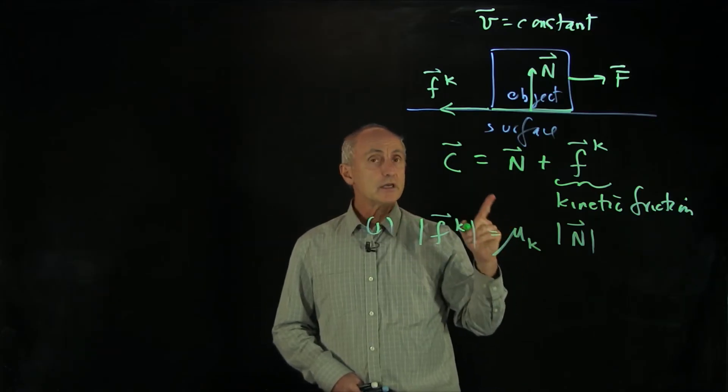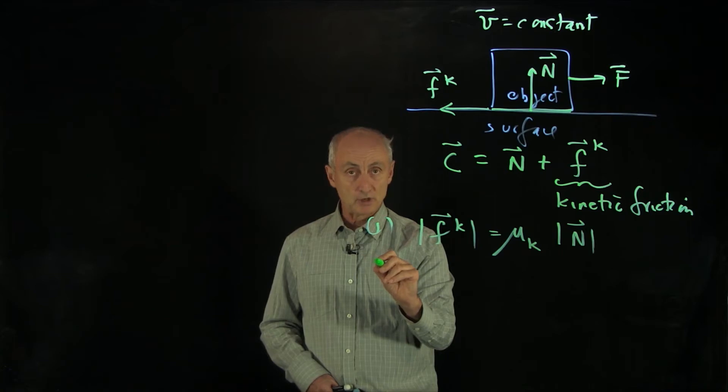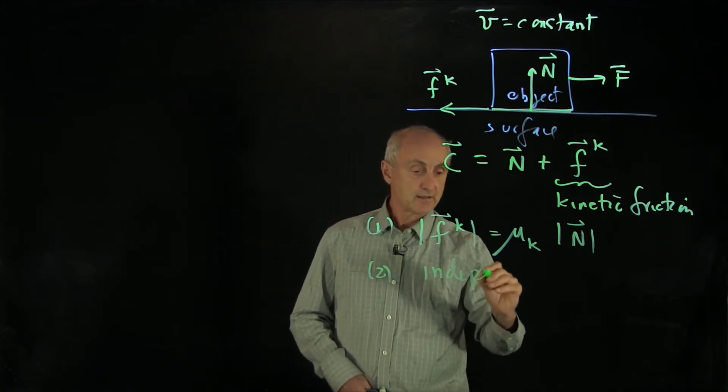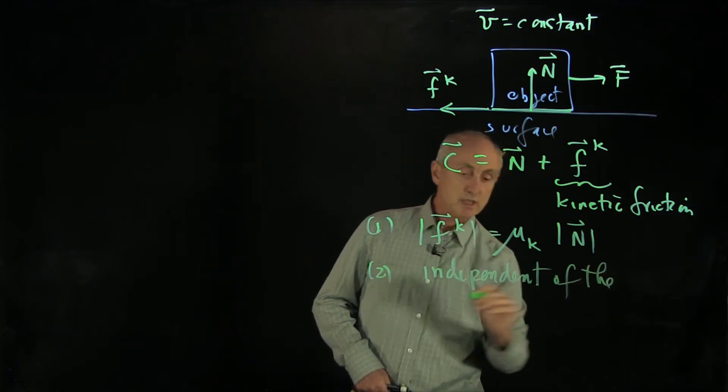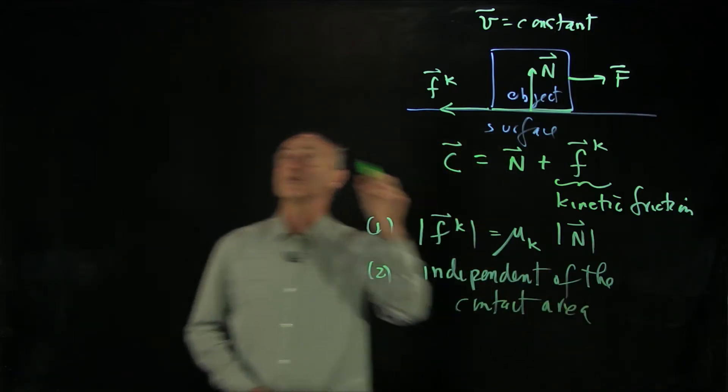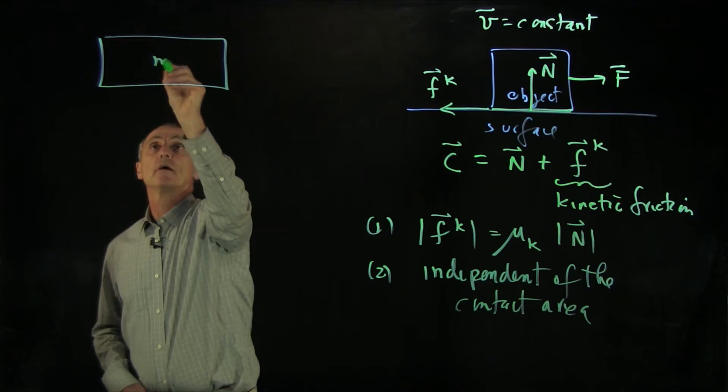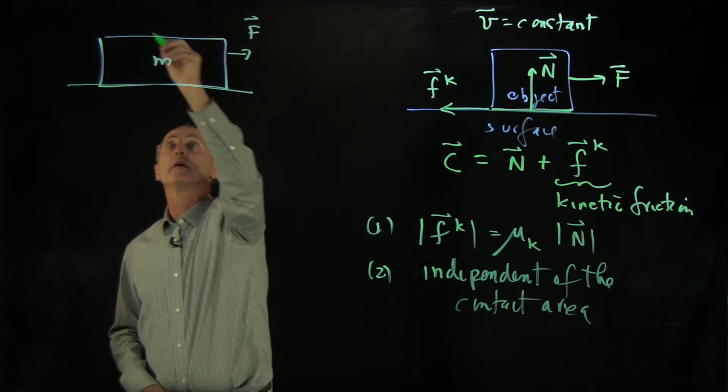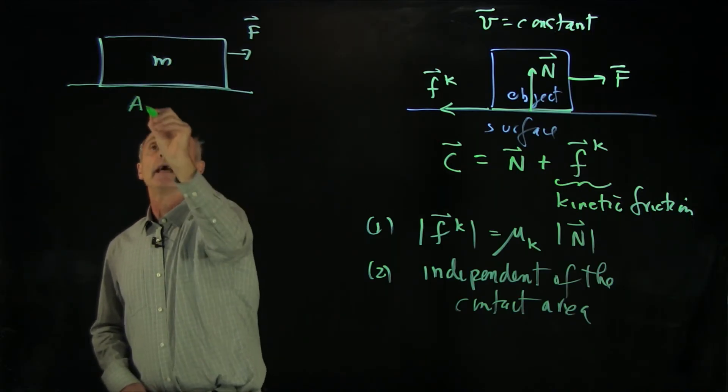Now this law is telling us something very interesting, that two key properties are, one, that it's independent of the contact area. Now what do we mean by that? So let's look at the following picture. Suppose we have two objects of the same mass on the surface. We're applying a force F and the contact area here, A1.